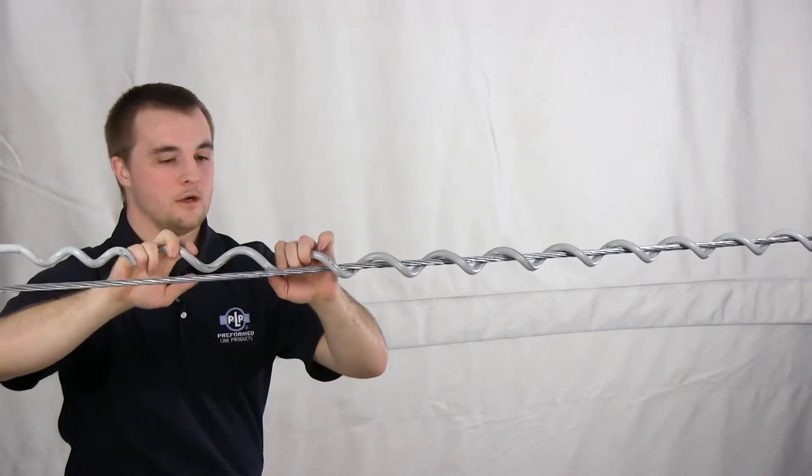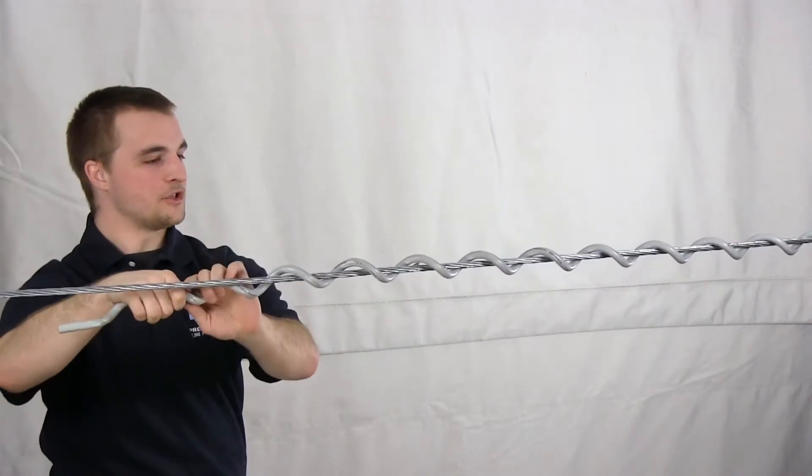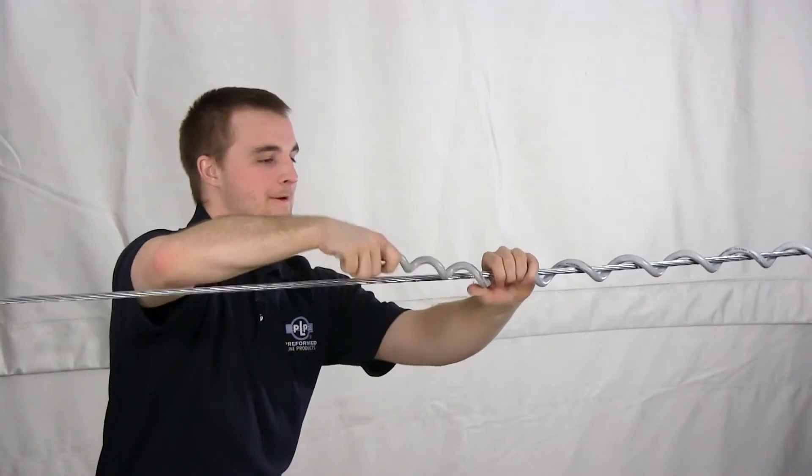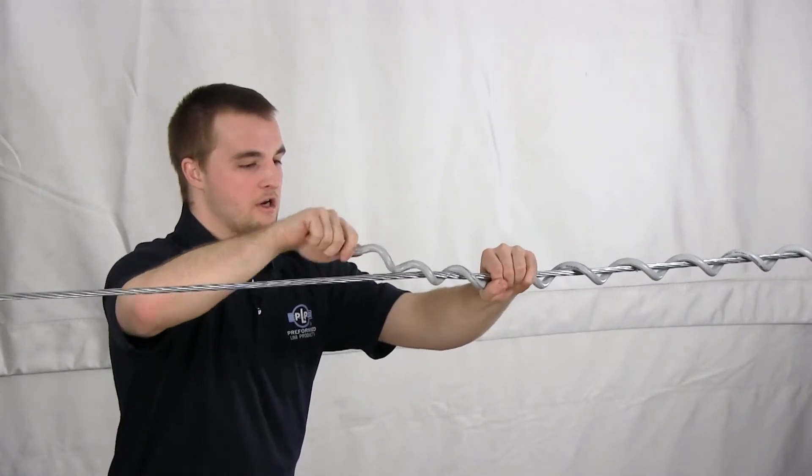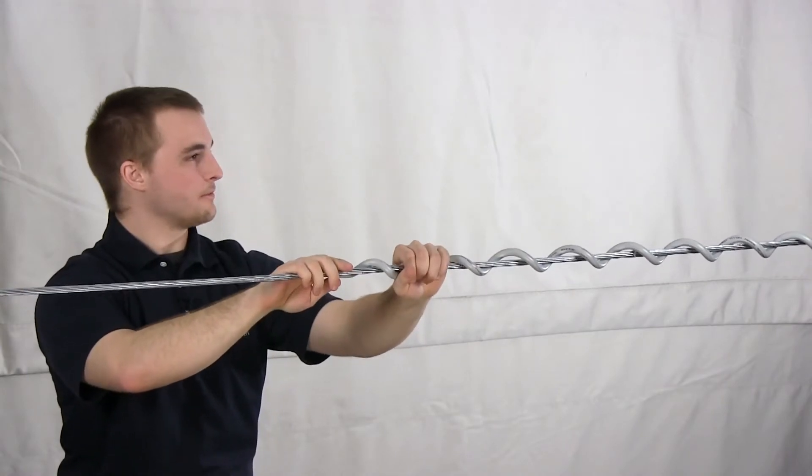Okay, so let's say I want to install the gripping section right here. I just twist on the damping section, slide it along until I get to the gripping section, and wrap it onto the conductor and snap it into place.